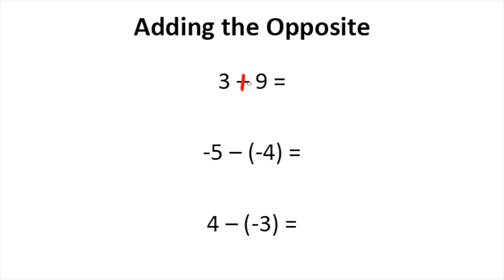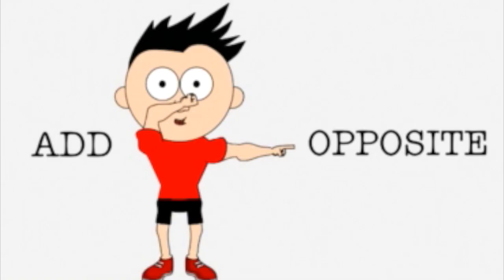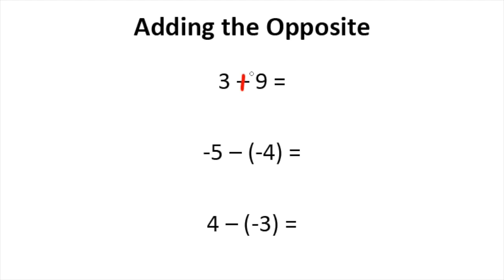Then what you want to do is take the opposite of that second number. Notice the second action done by our cartoon character is him pointing to his right. This reminds us that when we are finding the opposite, we should find the opposite of the number to the right of our addition sign. So opposite of a positive 9 would give us a negative 9. So now instead of 3 minus 9, now we have 3 plus a negative 9, which is actually equivalent to that first expression.